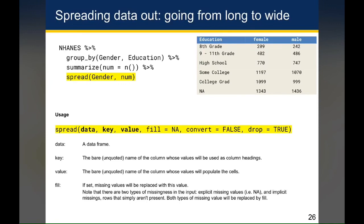Spread is the function we use when we want to go from long data and turn it into wide data. If you look at the help function for spread, you'll notice it takes several arguments, but the only required ones are data, key, and value. Since data comes from the pipe, the only two arguments you need to supply are key and value. The key is the column whose values will be used as column headings — in this case, gender has values female and male, which become the column headings. The value is the name of the column whose values will populate the actual cells — in this case, the num column provides the numbers that enter the female and male columns.